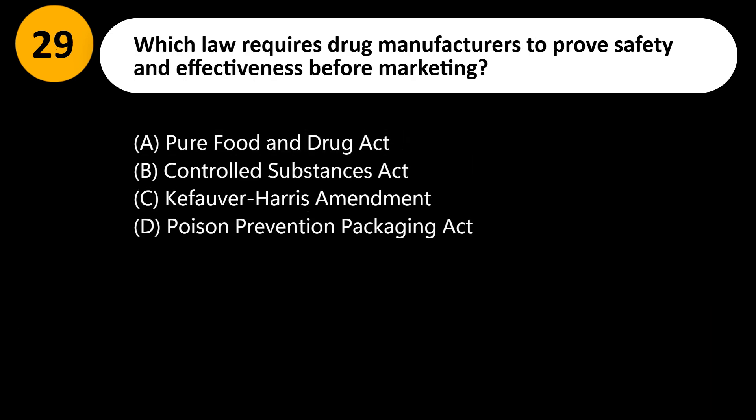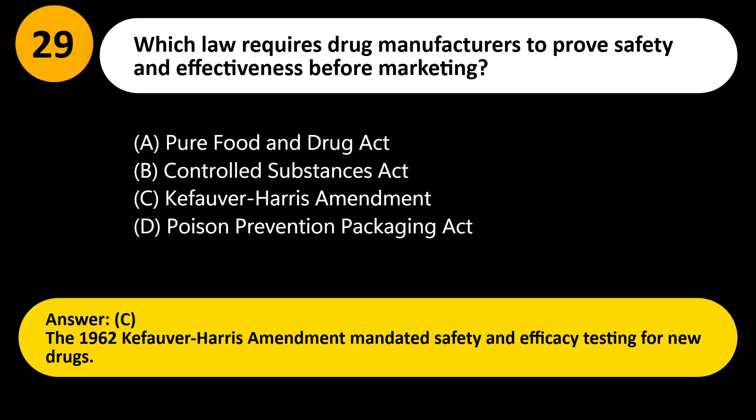Which law requires drug manufacturers to prove safety and effectiveness before marketing? A) Pure Food and Drug Act, B) Controlled Substances Act, C) Kefauver-Harris Amendment, D) Poison Prevention Packaging Act. Answer: C. The 1962 Kefauver-Harris Amendment mandated safety and efficacy testing for new drugs.